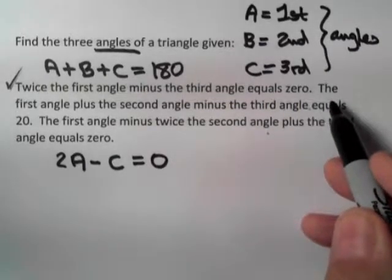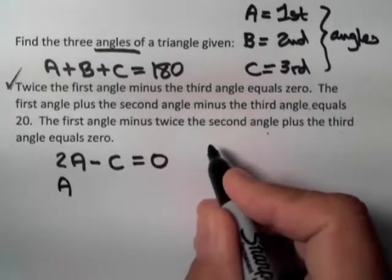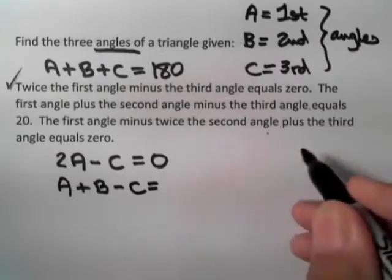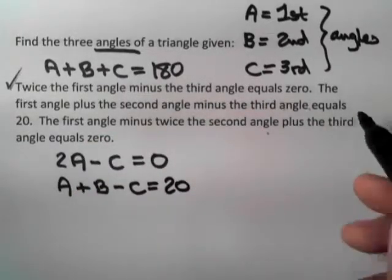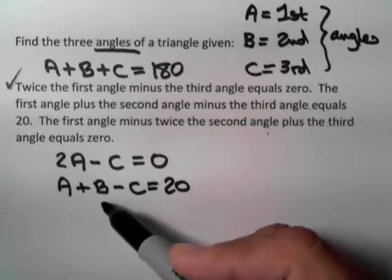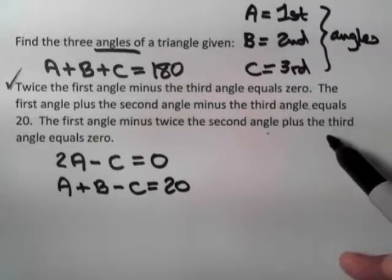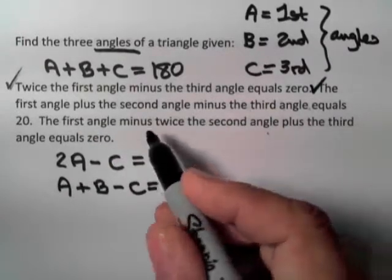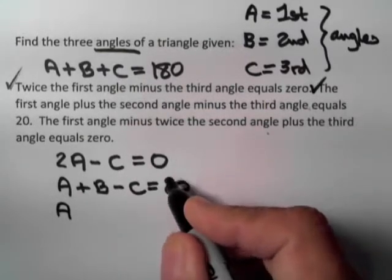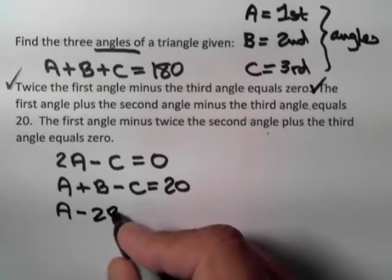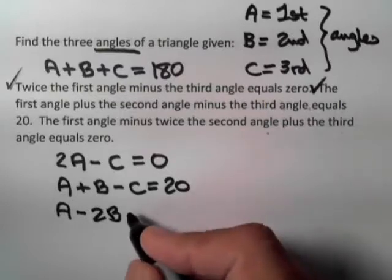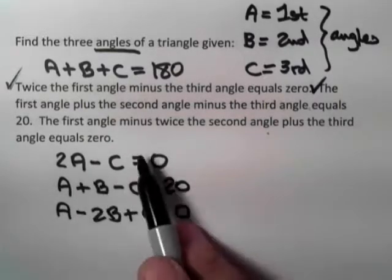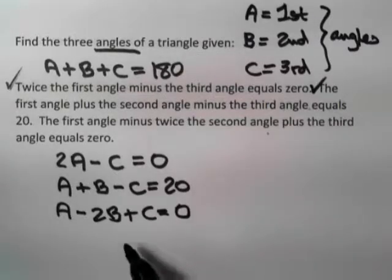The next sentence: the first angle A plus the second angle B, minus the third angle C, equals 20. Double-checking: A plus B minus C equals 20. Then one more sentence: the first angle A, minus twice the second angle minus 2B, plus the third angle plus C, equals zero. Double-checking: A minus 2B plus C equals zero.